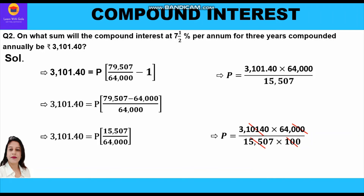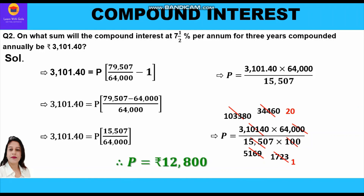Simplifying 310140 and 15507 by dividing both by 3, we get 103380 in the numerator and 5169 in the denominator. Dividing both by 3 again gives 34460 and 1723. Now 34460 divided by 1723 gives 20. Further, 20 into 640 gives 12800 as the principal. So the sum that will gain compound interest at seven and a half percent per annum for three years compounded annually is rupees 12800.